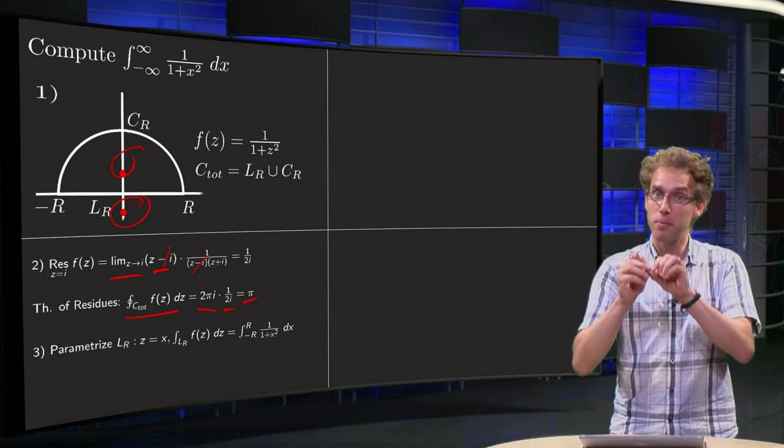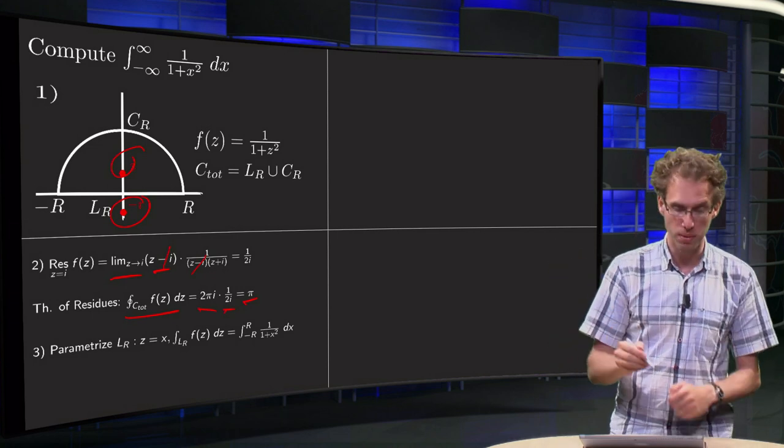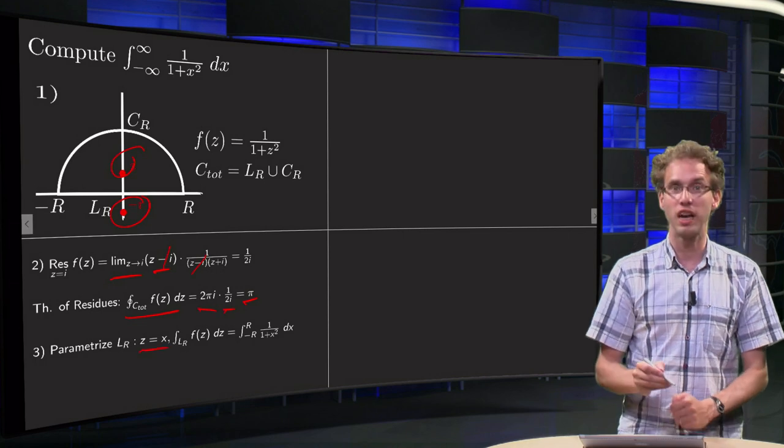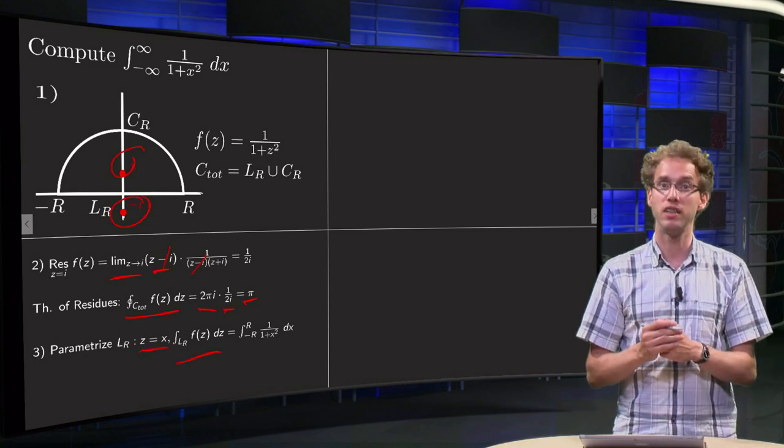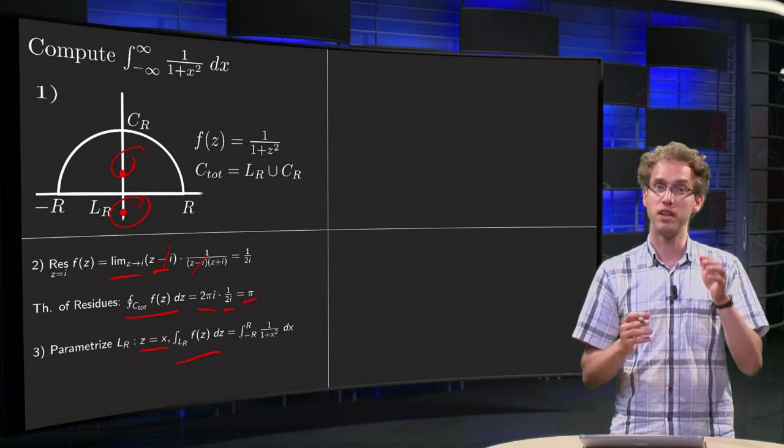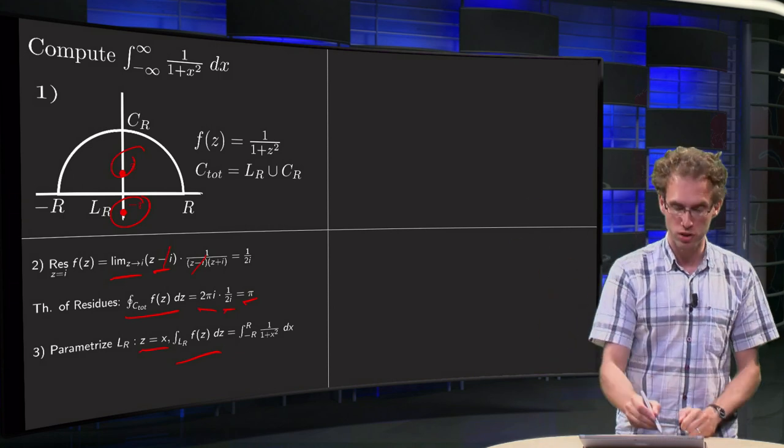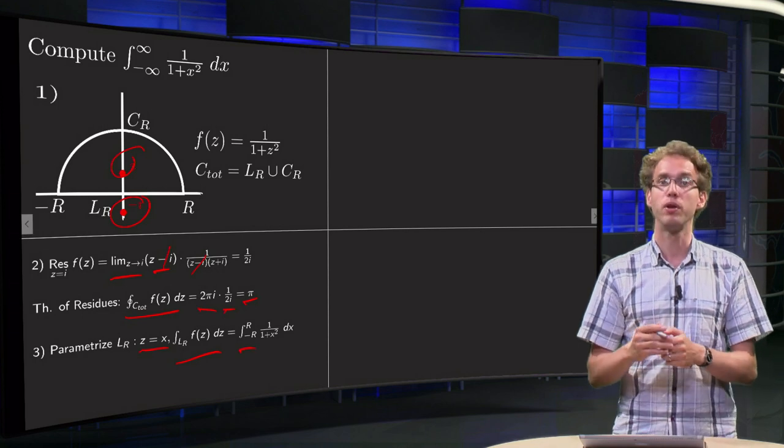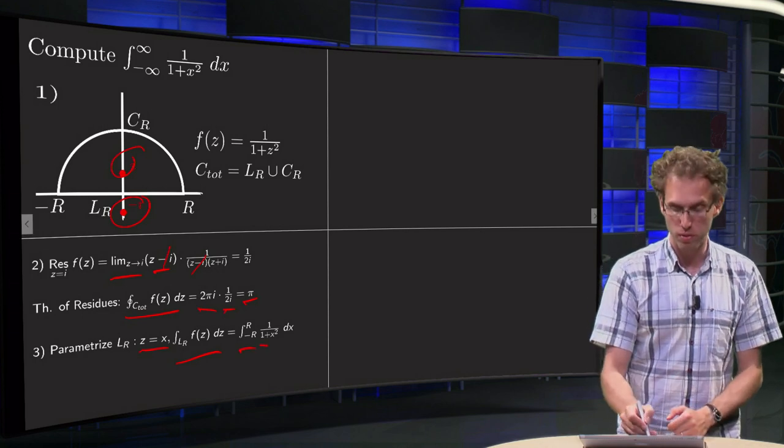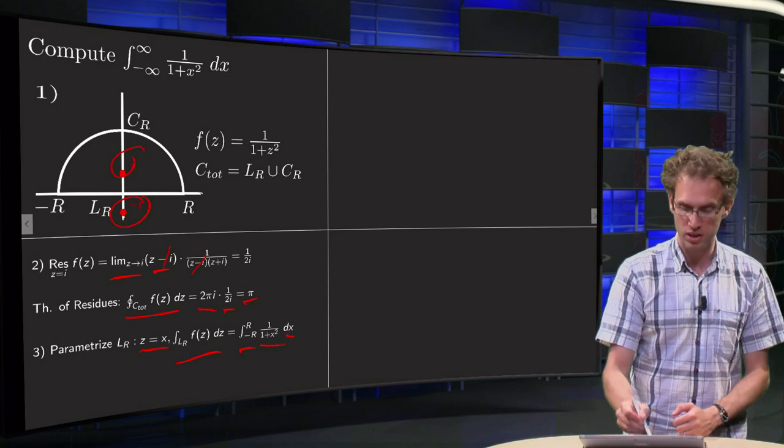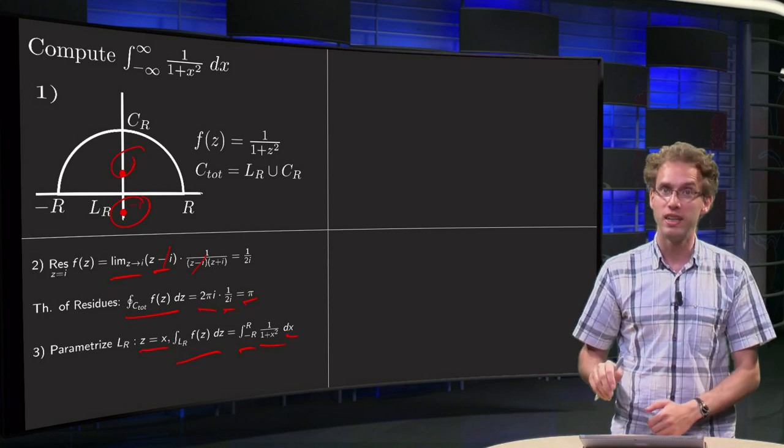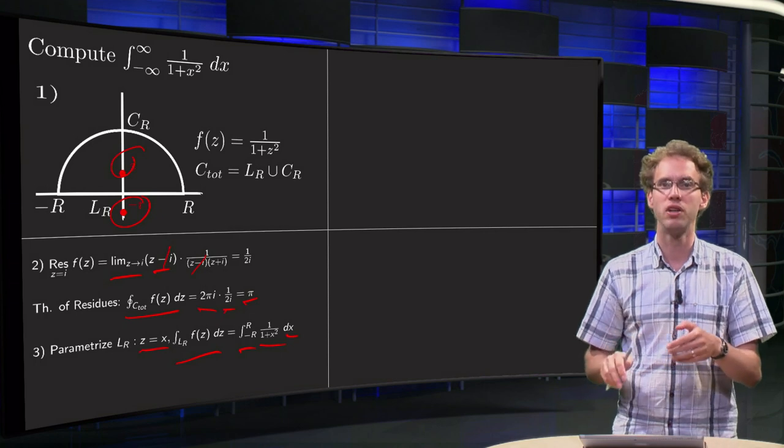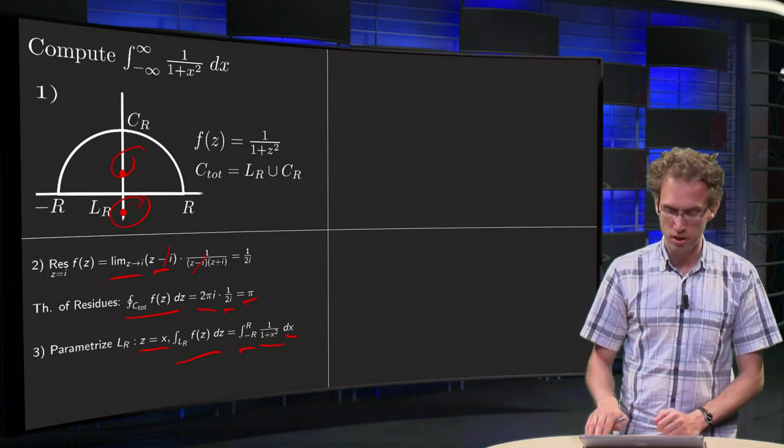Step 3: We parameterize L_R. Well, it's an easy step here. We can just take z equals x, and then integral L_R f(z) dz—z runs from minus R to R, so x runs from minus R to R as well. 1 over 1 plus z squared yields 1 over 1 plus x squared, and dz becomes dx. So that step is in this example particularly easy. It's usually not too hard, this third step.